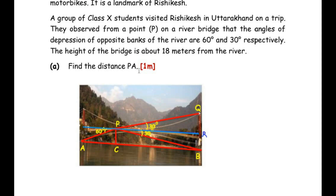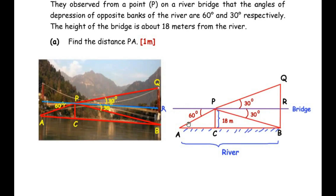I have highlighted in red and yellow all the important information given in the diagram. I will now make a skeletal diagram representing the bridge to make calculations easier. The blue or purple line represents the bridge on which the students are standing at point P. A and B represent the opposite banks of the river, and the entire width from A to B represents the river. The bridge height is marked as 18 meters. The angle of depression looking at A is 60 degrees and looking at B is 30 degrees.